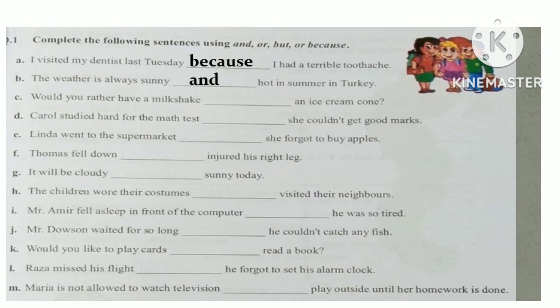Part C is: would you rather have a milkshake __ an ice cream cone? There are two choices or options — milkshake and ice cream — so when we have options, we join these two parts using the conjunction OR. Answer: Would you rather have a milkshake or an ice cream cone? In the same way, you will solve the rest of the parts yourselves.